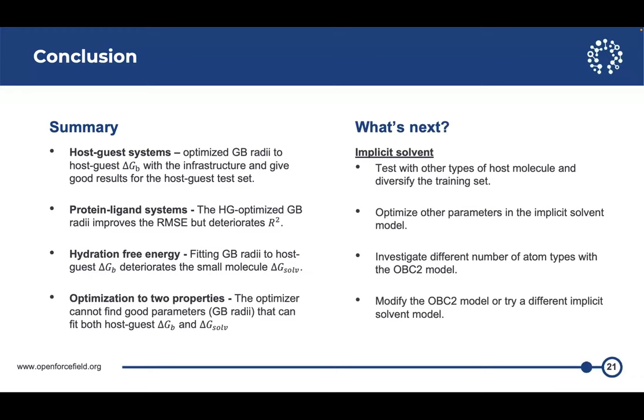So what's next? I think I need to look at other types of host molecules to diversify the training set. And we also want to see how well it transfers to other host molecule types. We're looking at optimizing other parameters besides the GB radii. And we're also looking at splitting atom types just to see if we can get away from this unphysical small radius for nitrogen atoms. We're also currently working on modifying the OBC2 model with the SMIRNOFF plugin. But if that doesn't work, we will try a different implicit solvent model. Finally, we also want to test optimizing the Lennard-Jones parameters with explicit solvent. And hopefully we can integrate host-guest binding data into future OpenFF releases.